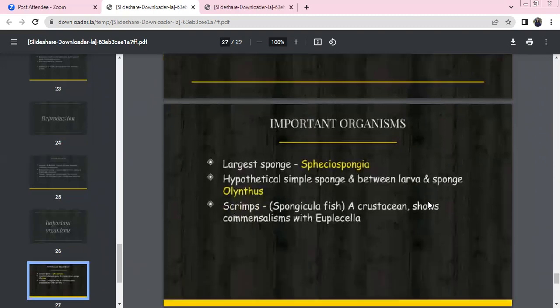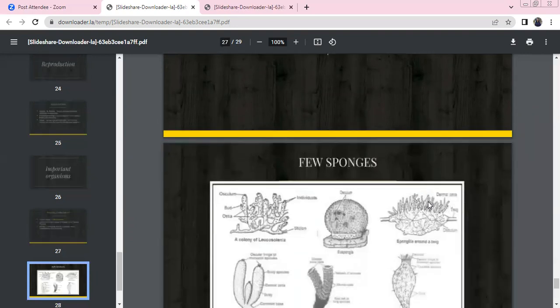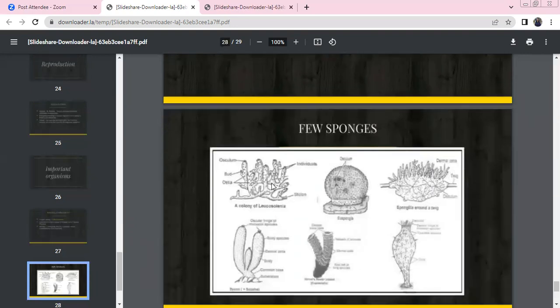Important organisms: The largest sponge is Speciospongia. Olynthus is a hypothetical simple sponge. Scypha shows syconoid variety of canal system. Spongiocola shows commensalism with crustaceans. Leucosolenia has radial symmetry. Euspongia is a bath sponge. Spongilla is a freshwater sponge. These are a few examples of sponges. Thank you.